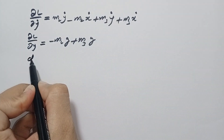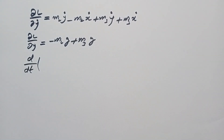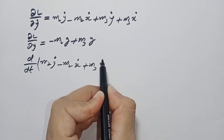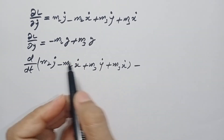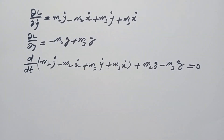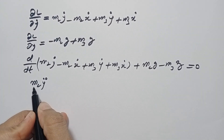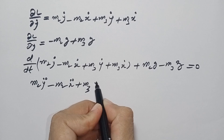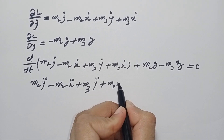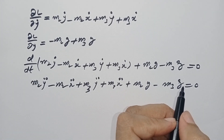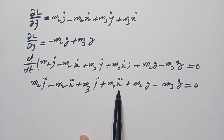The second Lagrange equation gives d/dt(∂L/∂ẏ) − ∂L/∂y = 0: m2ÿ − m2ẍ + m3ÿ + m3ẍ − (−m2g + m3g) = 0. Collecting ÿ terms gives (m2 + m3)ÿ, and ẍ terms give (m3 − m2)ẍ.